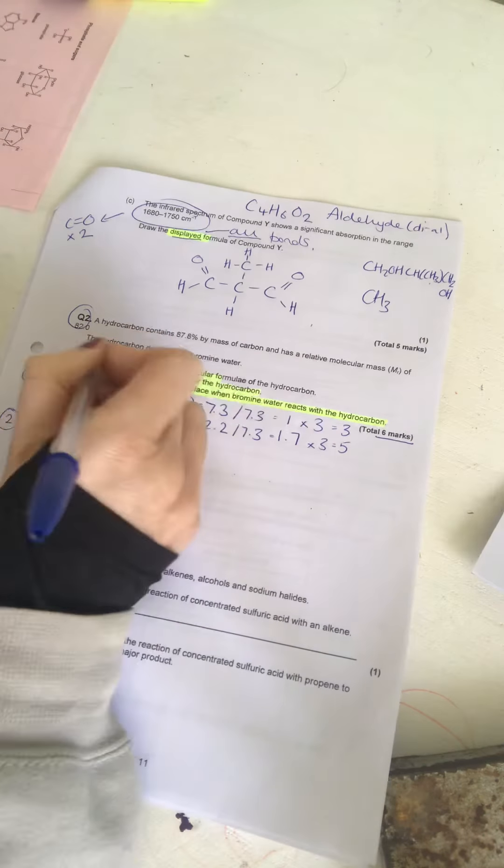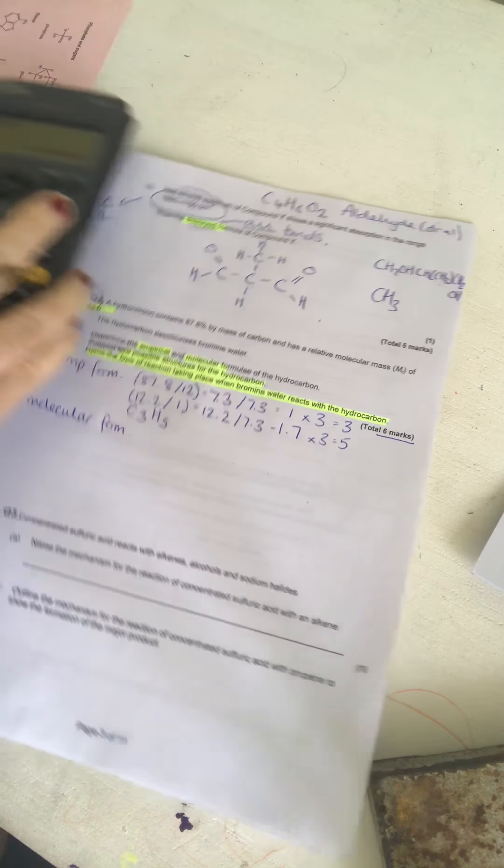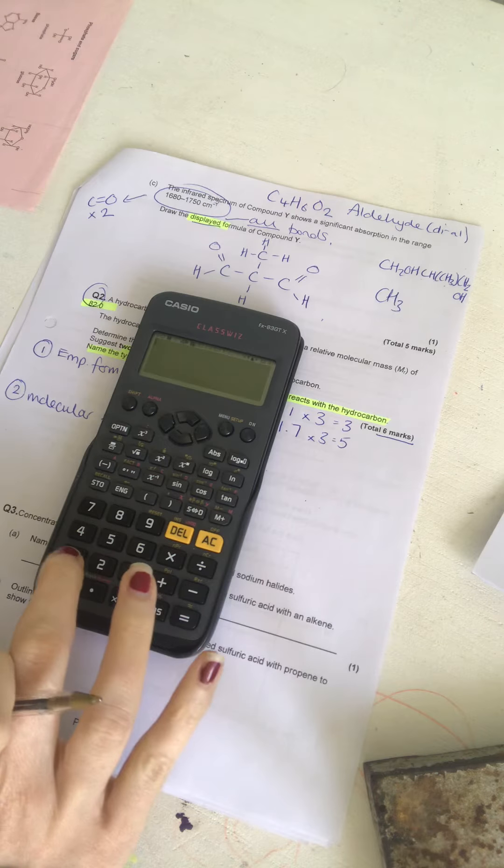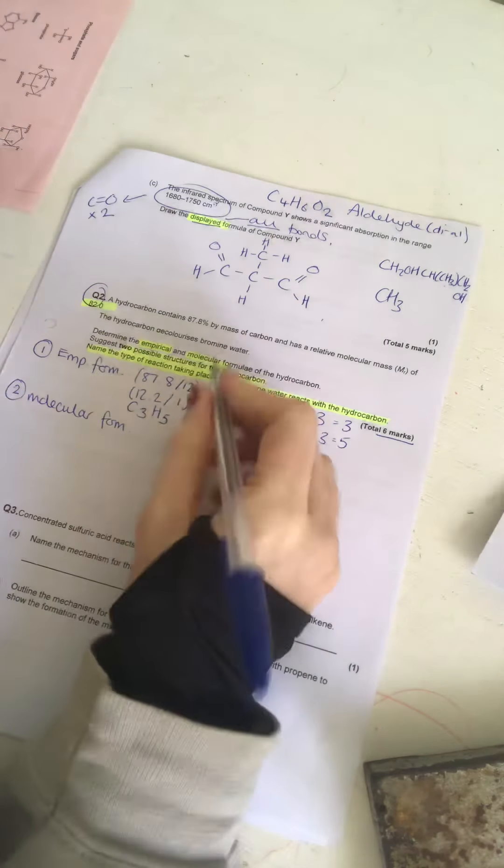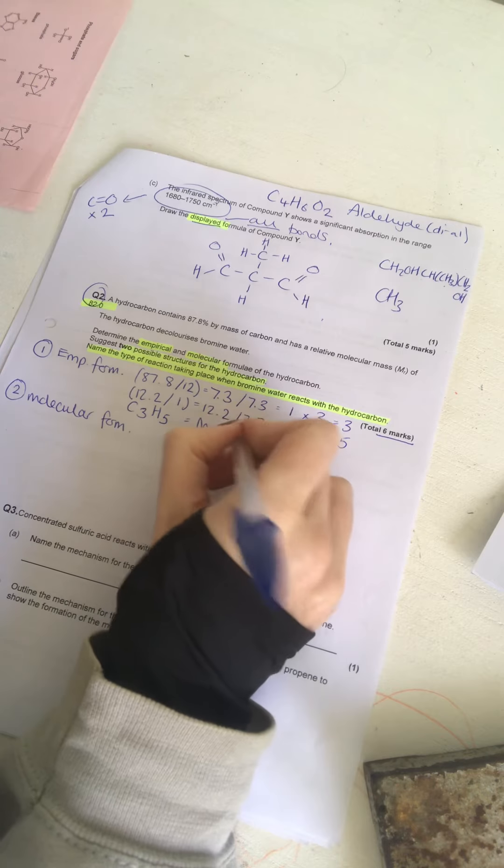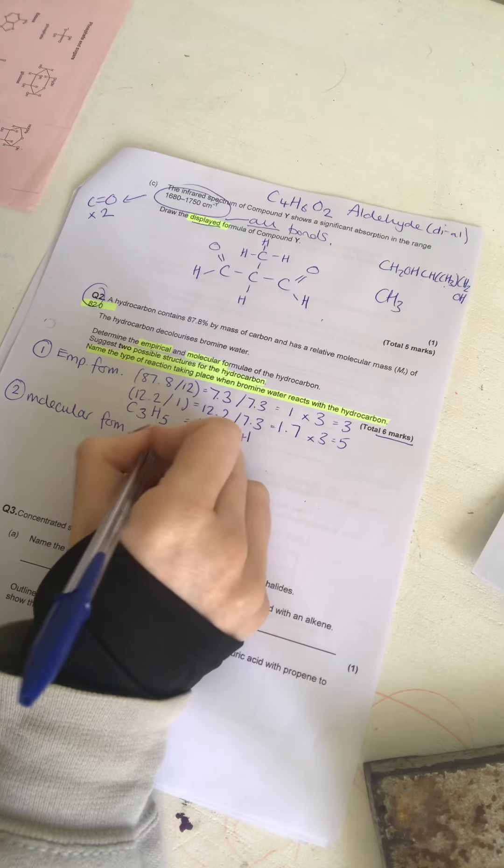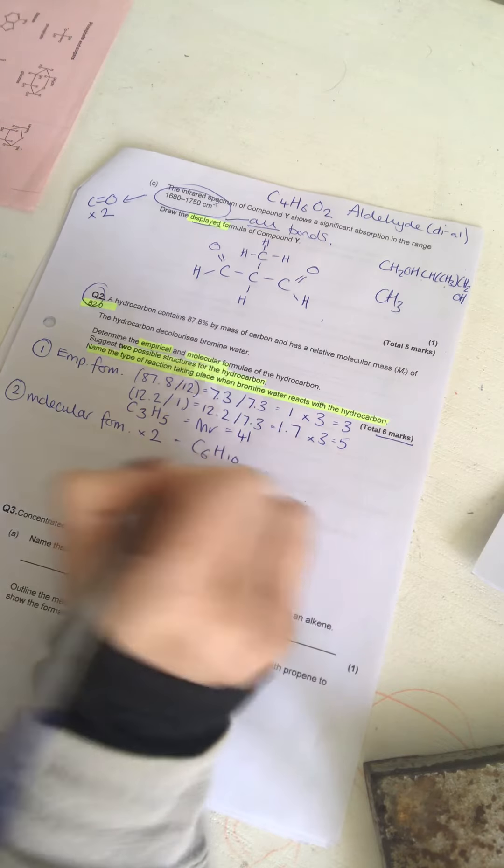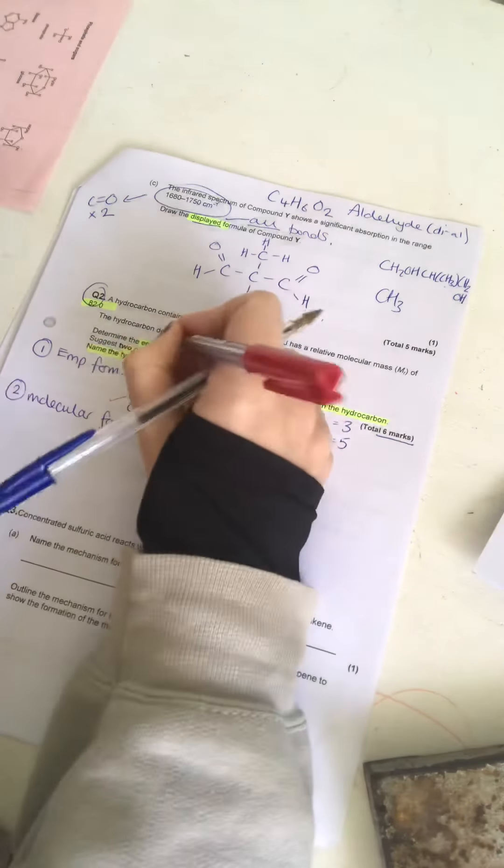And now I need to work out the molecular formula. So, I can do that because I've been told that the MR of the compound is 82. So, if I work out the MR of the empirical formula, so 12 times 3 plus 5 is 41. So, I can see that 41 goes into 82 twice. The molecular formula is going to be twice as much as the empirical. So, that's going to be C6H10. Okay. So, that's my empirical formula done. That's the molecular formula done.